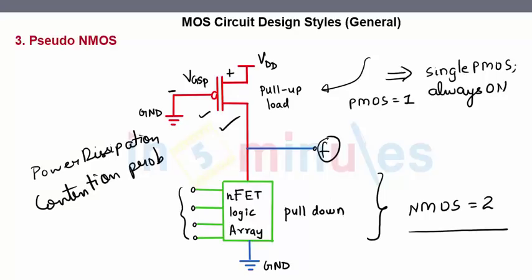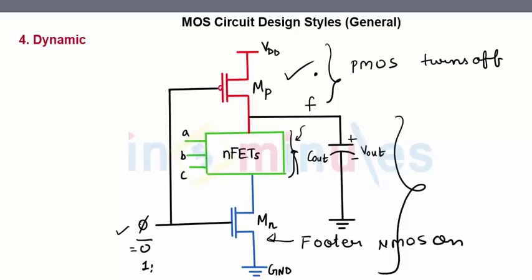So we went to the next style called pseudo NMOS where we reduced the number of PMOSes by just 1, but it had its own problem. So we went to dynamic in which the pull-down network was same like pseudo NMOS and static CMOS.